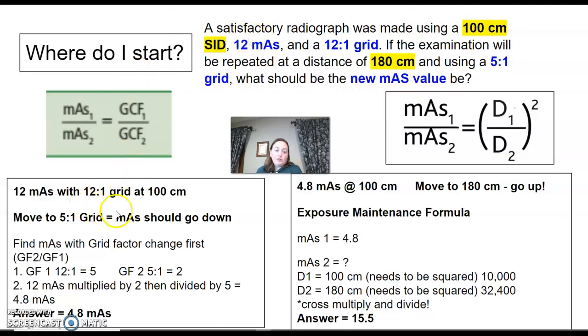So here's that question again. I put it up top. I start with the changing grid first. So I take my original numbers: 12 mAs, 12:1 grid at 100 cm. We're moving down to a 5:1 grid. So I know my mAs has to go down. I'm going to plug my numbers into this conversion factor. Remember, we've got to use our Bucky factors. So 12:1 was a factor of 5. 5:1 was a factor of 2. Calculate it all out, it gives me 4.8 mAs.